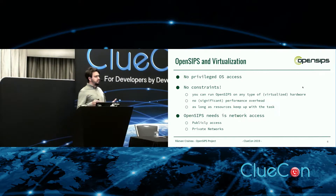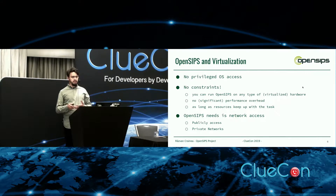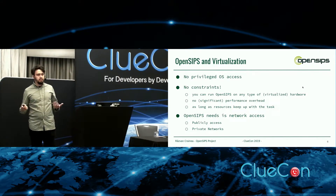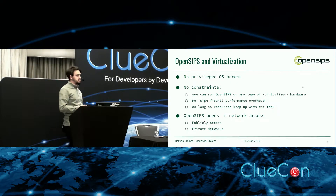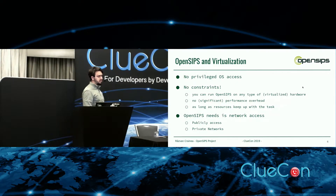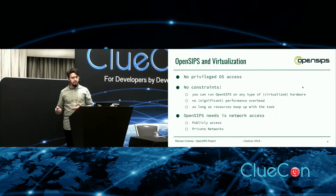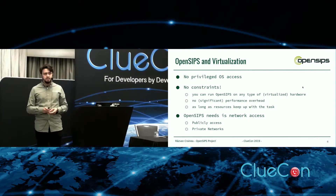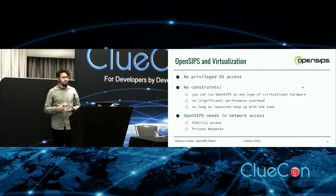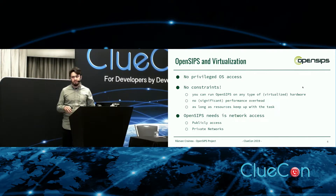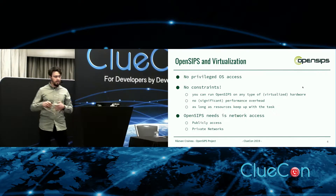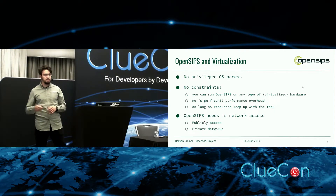As long as you have the resources to allocate for that specific environment, OpenSips can run without any problems. All it needs is network access. The networking can be public or private. I'm not going to talk about public networks because that's probably the most common scenario, but I will talk about private networks.